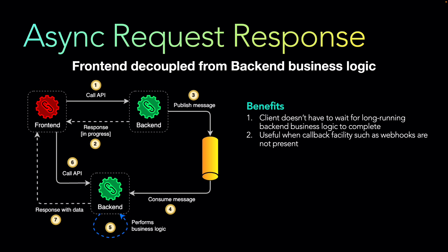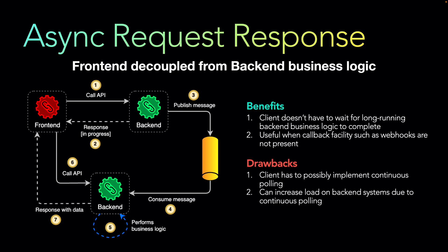However, there are drawbacks. The client has to implement continuous polling — the front end doesn't know when the second backend service has completed its job. You may also implement heartbeat mechanisms, continuously polling to get the data. This can increase load on the backend system: if a job takes 15 minutes and you poll every five seconds, you'll make nearly 180 calls without fetching any data.